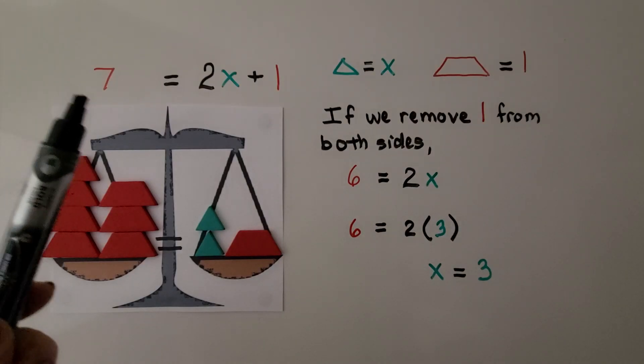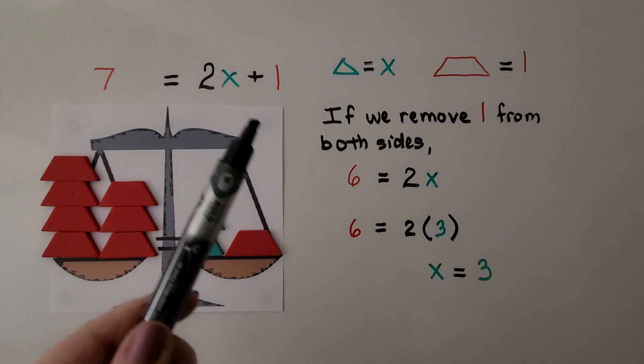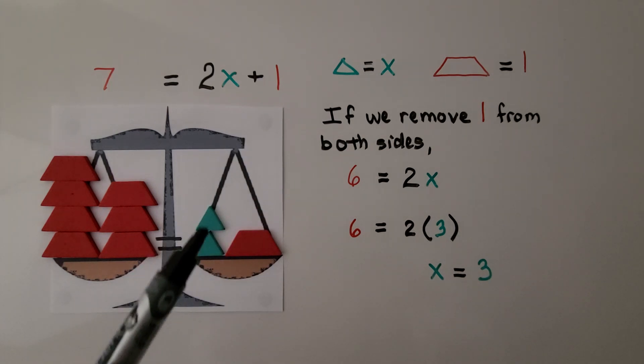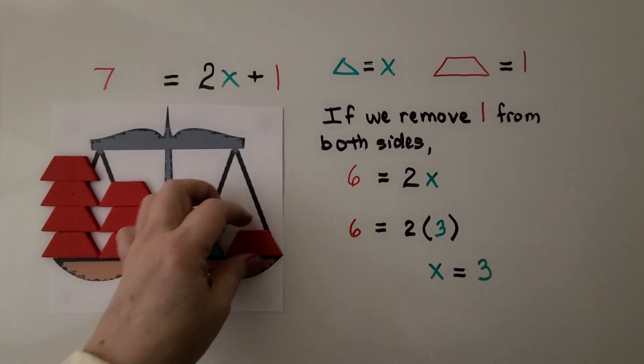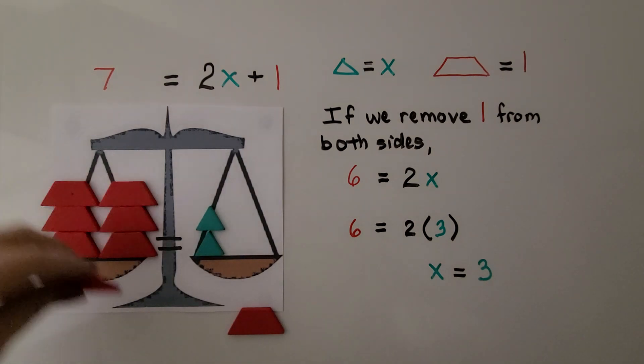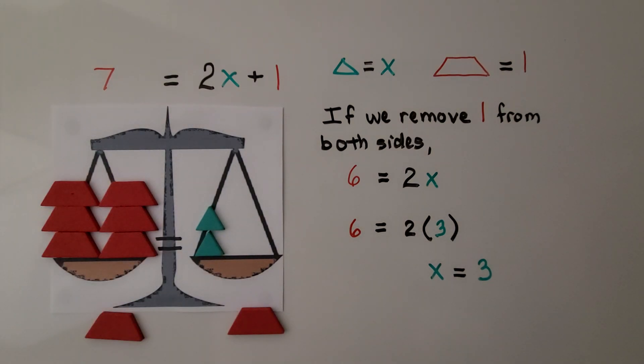Here our equation is 7 is equal to 2x plus 1. The triangles are going to represent the x. We have 2x. We have 2x. And each trapezoid is going to equal 1. We can remove 1 trapezoid from each side. That means 6 is equal to 2x. And we know that 2 times 3 is 6, so x must be equal to 3. Each triangle must be equal to 3.